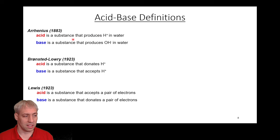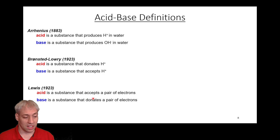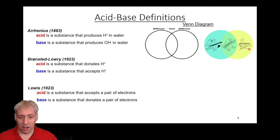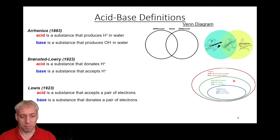There are three major acid-base definitions. Arrhenius says acids and bases only exist in water — you generate H-plus and OH-minus. Bronsted-Lowry defines acids and bases based on H-plus donation or acceptance. Lewis has the broadest definition: if it accepts a pair of electrons it's an acid; if it donates a pair of electrons it's a base. We can think about the broadness of these definitions using a Venn diagram — overlapping circles where different things share common properties, like a goose playing a keyboard, a beaver playing a guitar, and a platypus playing a keytar that combines aspects of both.